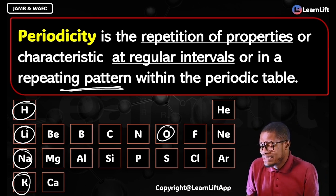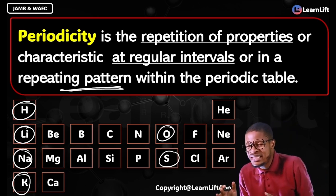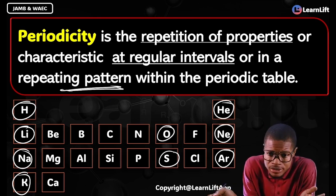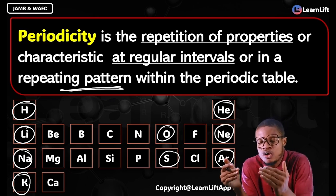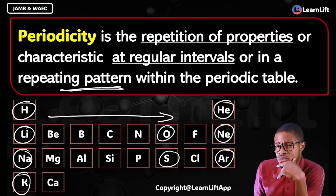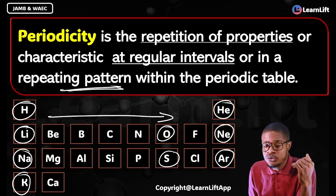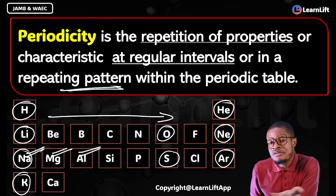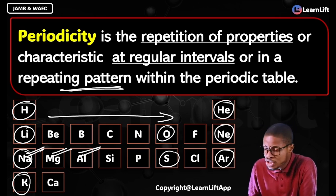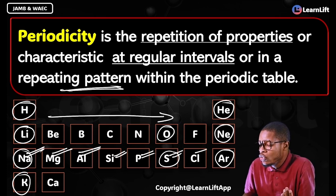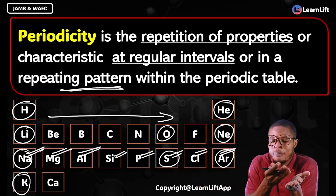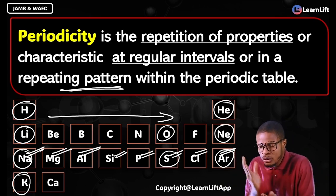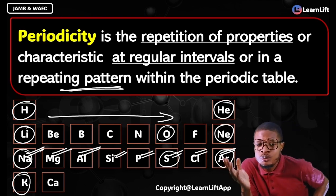If you come down to oxygen, it has 6 valence electrons, and sulfur also has 6 valence electrons — those properties are repeating. Look at all the noble gases: their outermost orbitals are completely filled. What property is that? Periodicity. Across the periods, sodium, magnesium, aluminum, silicon, phosphorus, sulfur, chlorine, argon — all of them have three shells. That property is also periodicity: the repetition of properties or characteristics at regular intervals within the periodic table.